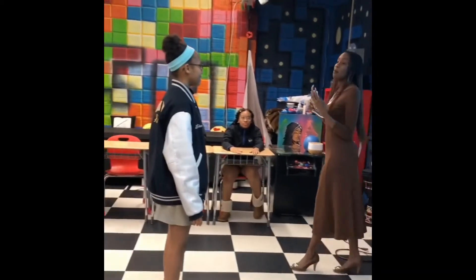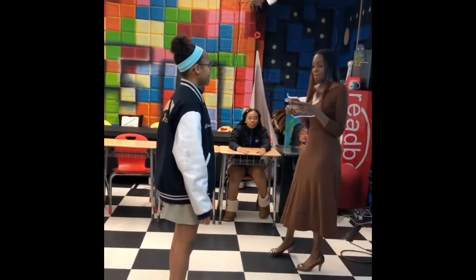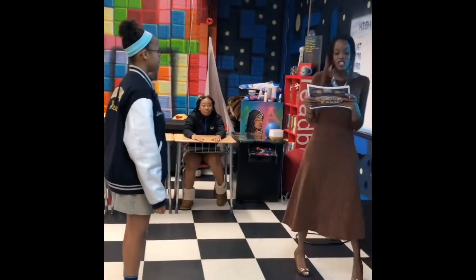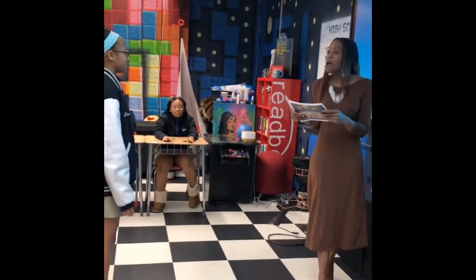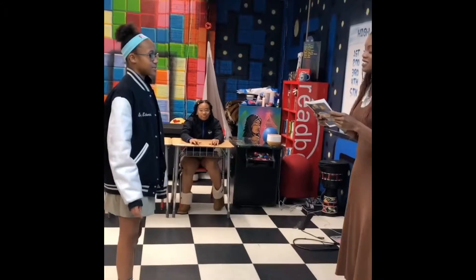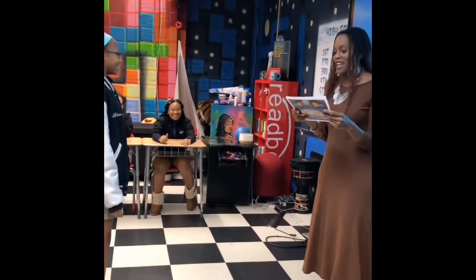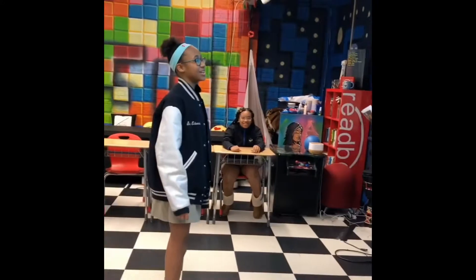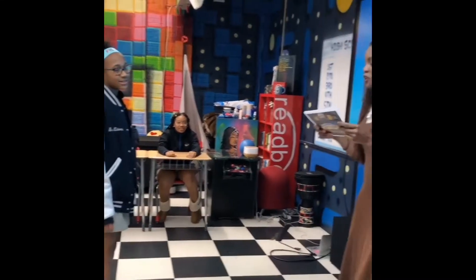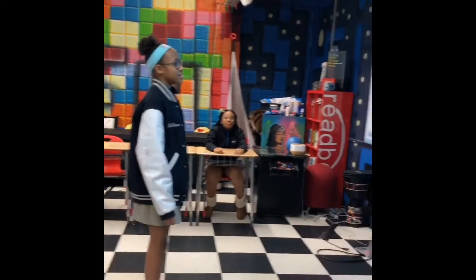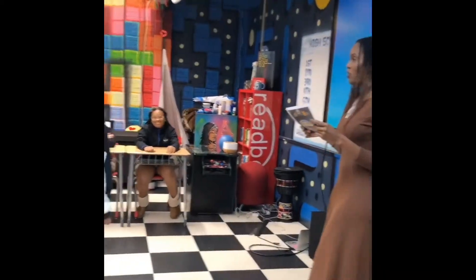What is your favorite property? Distributive property. Name a geometric vocabulary word. Triangle. Name a type of angle. Acute angle. Name a math vocabulary word that begins with a C. Commutative property. Name a type of number.